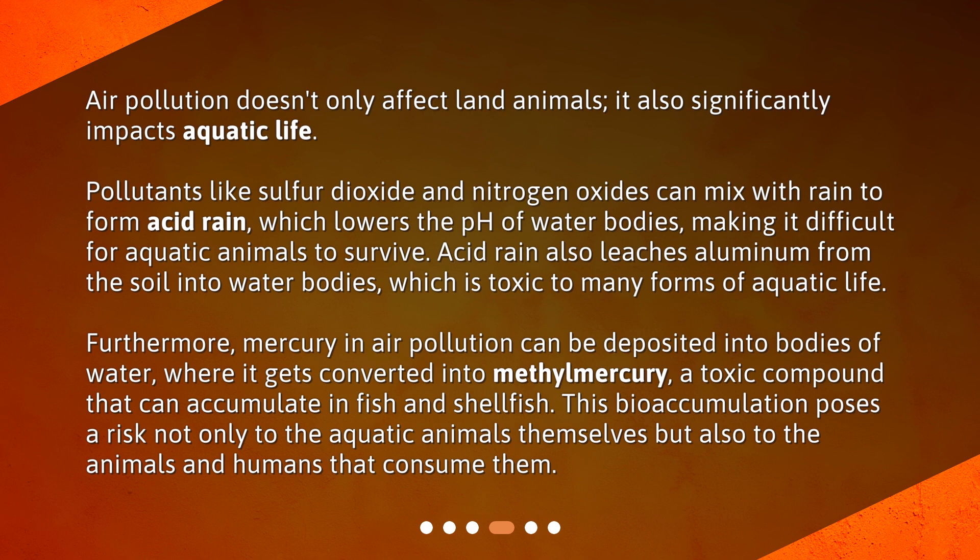Furthermore, mercury in air pollution can be deposited into bodies of water, where it gets converted into methylmercury, a toxic compound that can accumulate in fish and shellfish. This bioaccumulation poses a risk not only to the aquatic animals themselves, but also to the animals and humans that consume them.